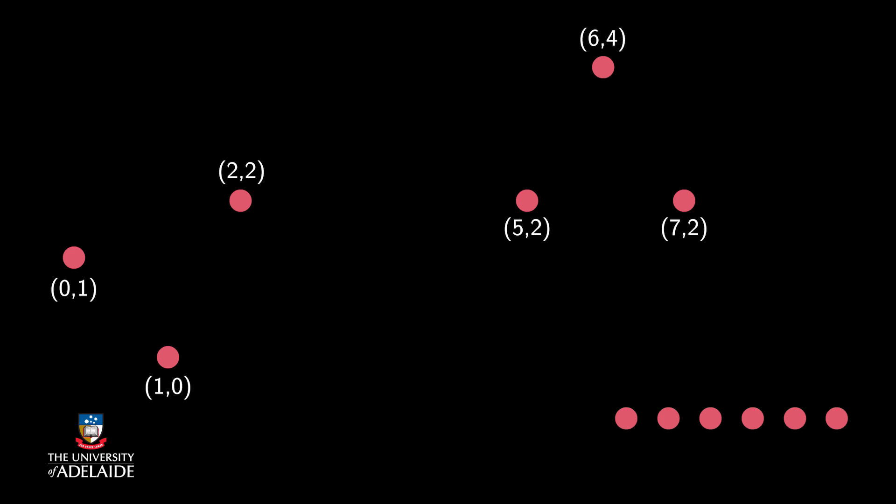At the beginning, there are six clusters. This is because each point is considered as a cluster at the start. According to the distances, points (0,1) and (1,0) should merge. The new cluster contains the merged clusters (0,1) and (1,0).